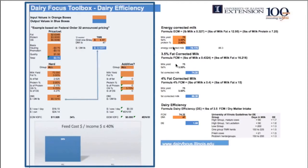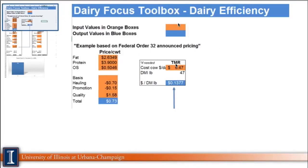Let me show you the left part of the tool. The orange squares are where you type your information; the blue ones are already calculated for you. Here you're going to enter your milk check data. In the Midwest, you get paid heavily for components, so I'm taking your milk check and representing all your revenue here. The key point is your milk price needs to be represented accurately in this spreadsheet.